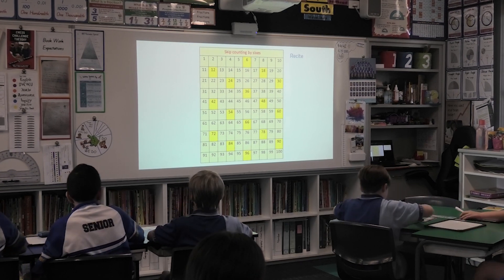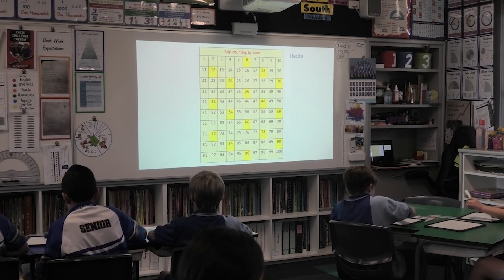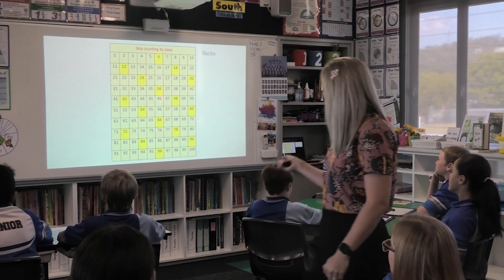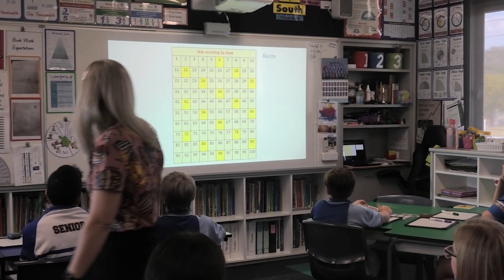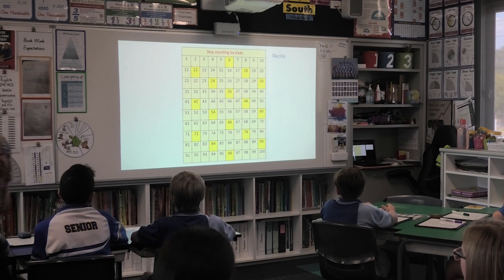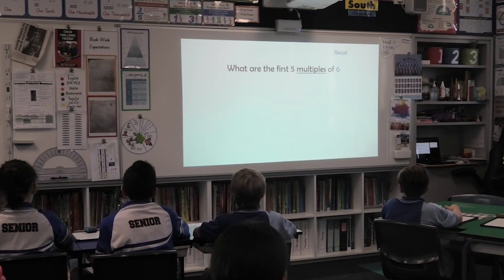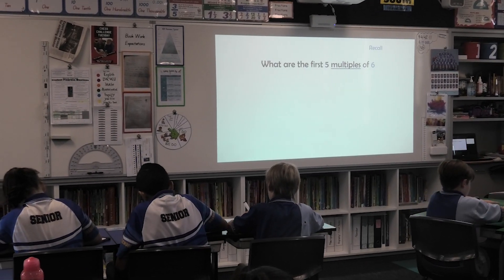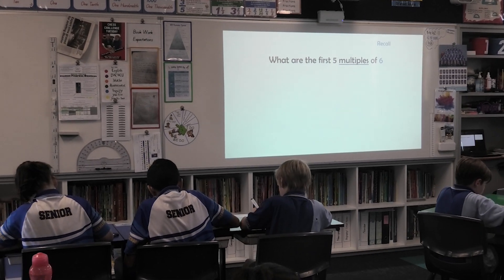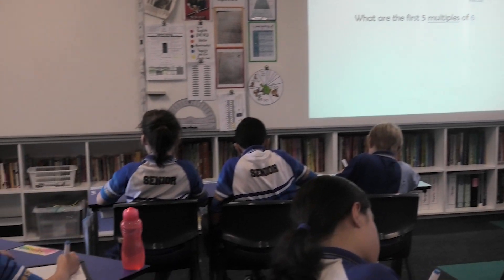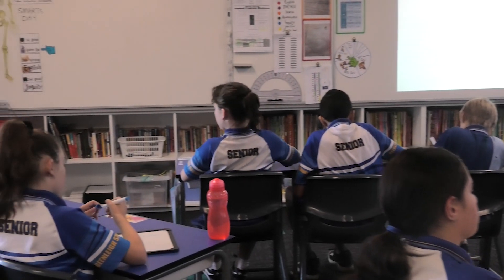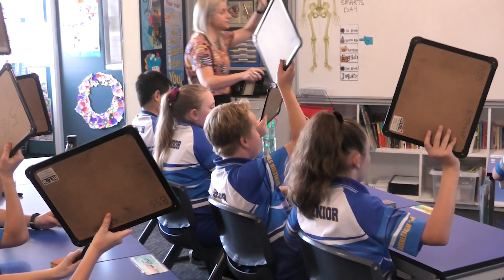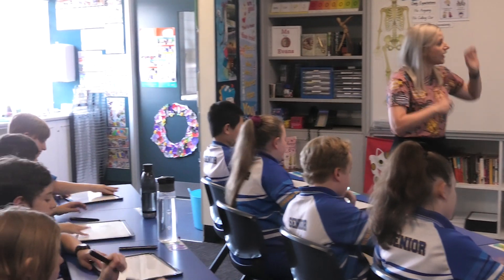All right. Let's skip count in our sixes. Remember the beat. Let's go. 6, 12, 18, 24, 30. What are the first five multiples of 6? 5, 4, 3, 2, 1. Boards up. Let's record them together. Let's go. 6, 12, 18, 24, 30. Excellent.